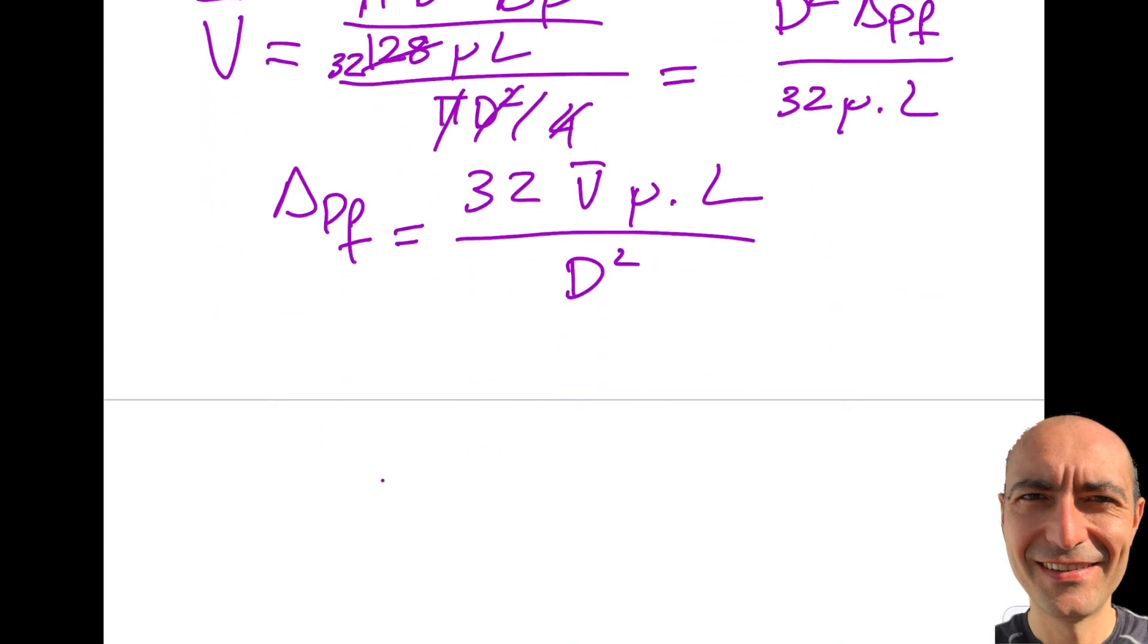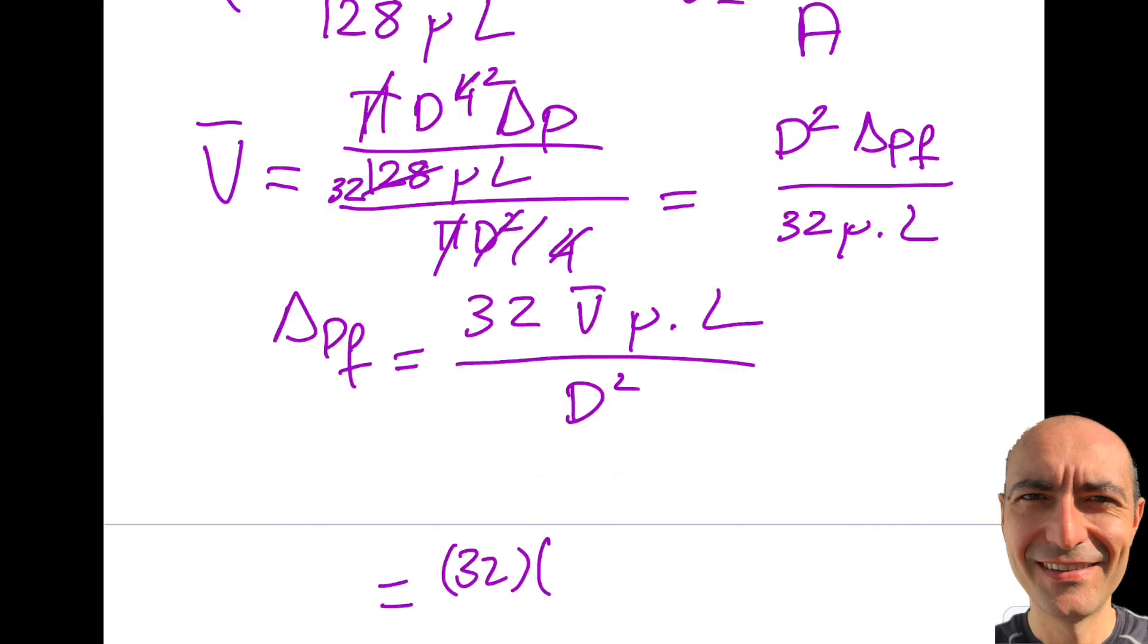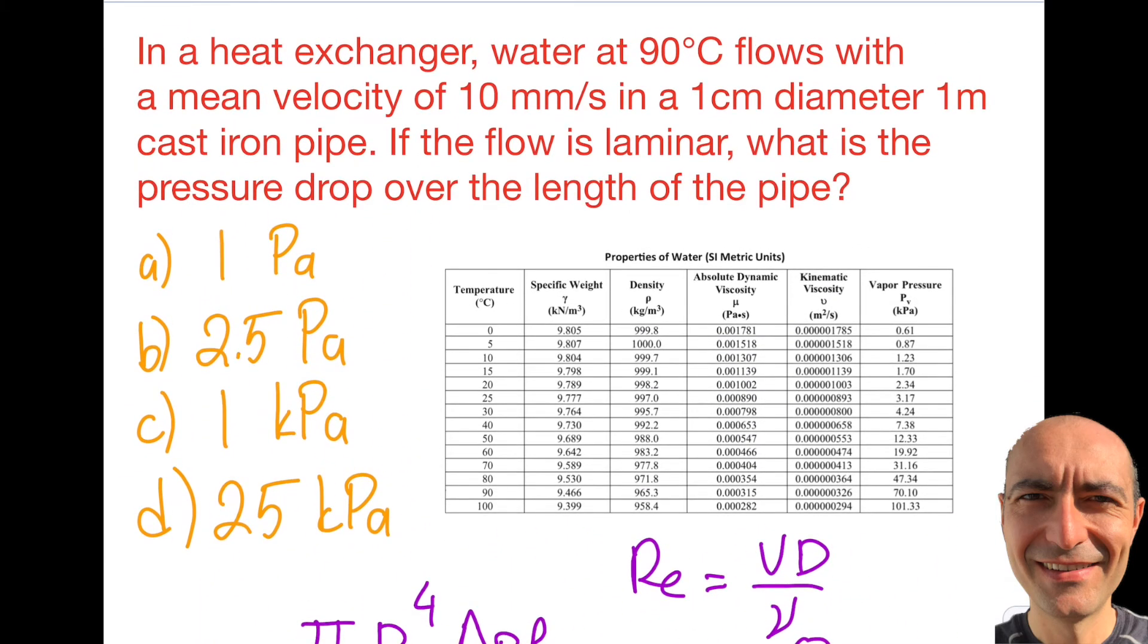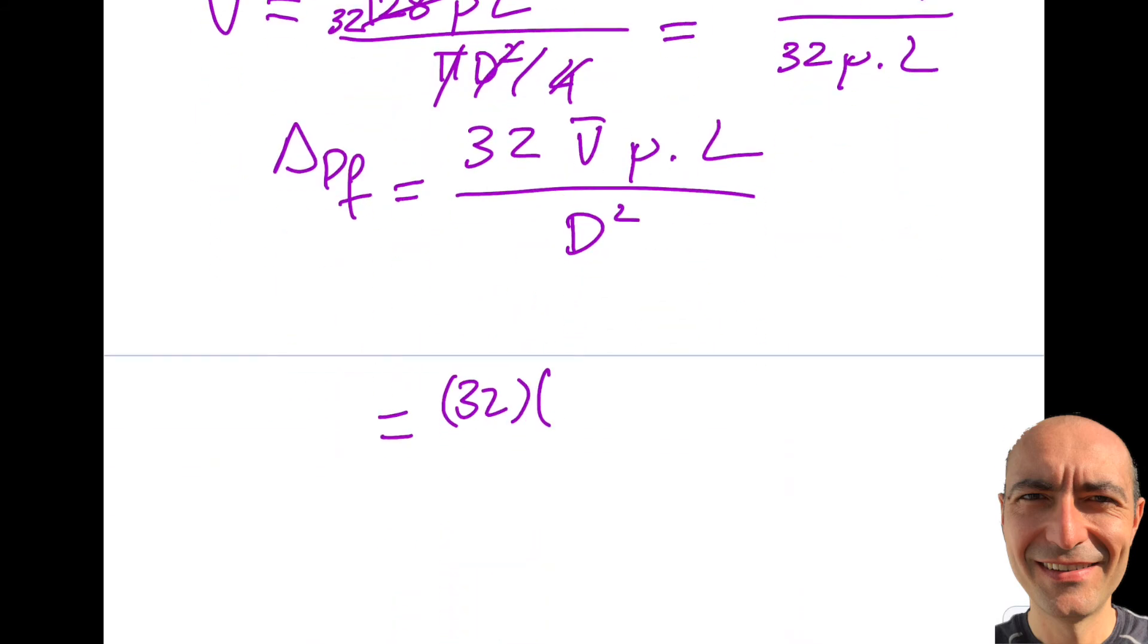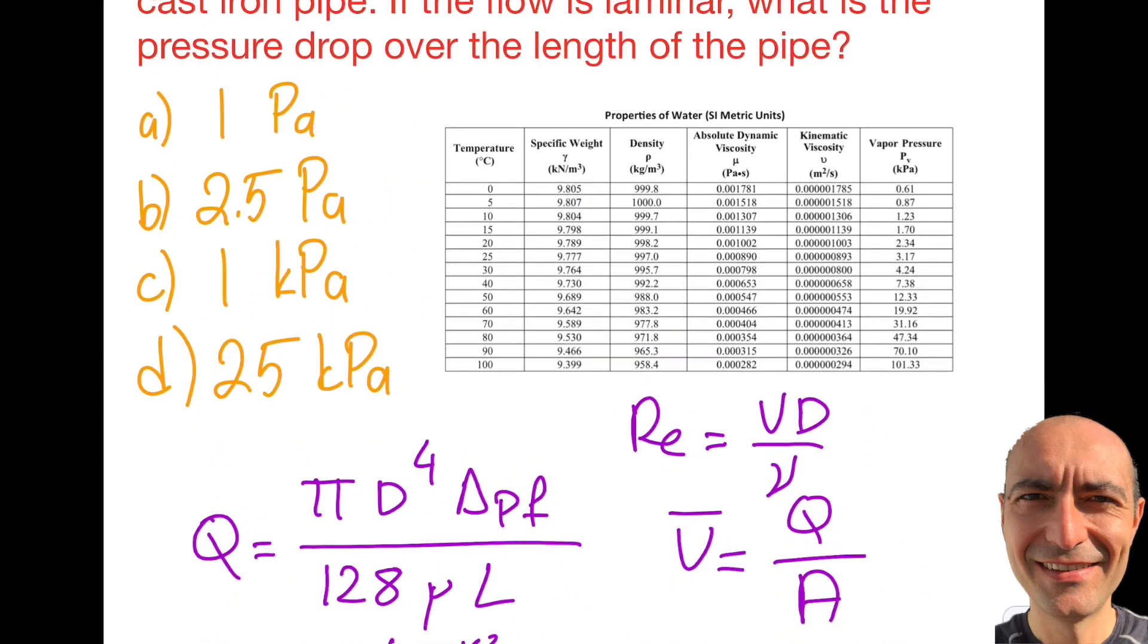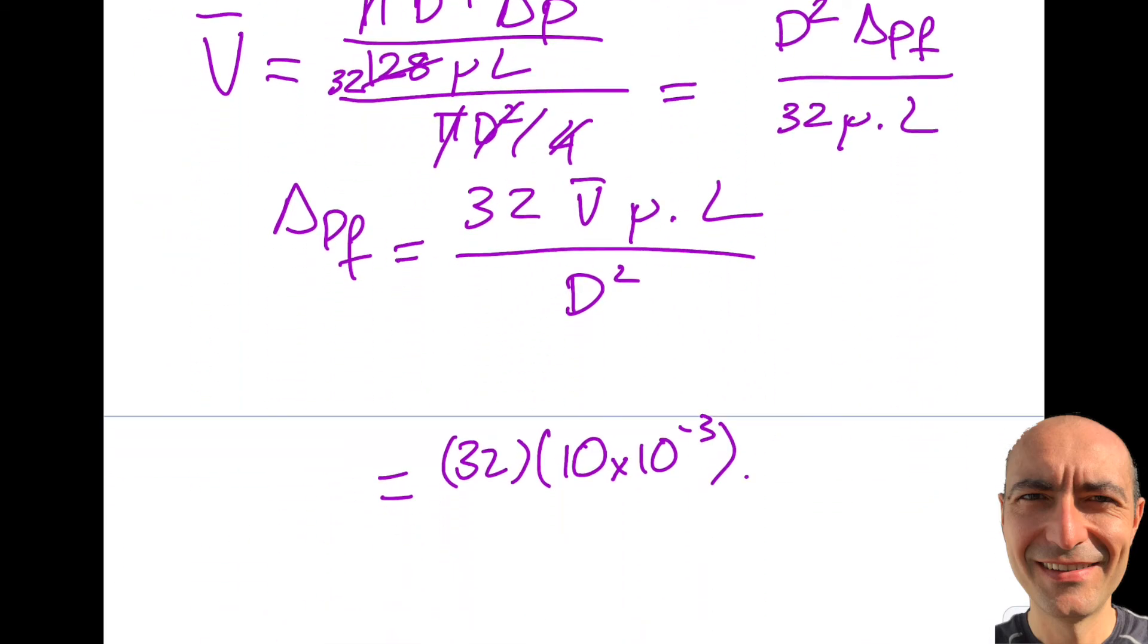The only thing left is to insert these values. 32 times mean velocity was given to me as 10 millimeters per second. So it is 10 times 10 to the minus 3, converting to meters per second. Times the viscosity. The question tells me it's 90 degrees, so what I have to do is follow this particular chart and I find 90 degrees, you see here 0.000315. That is the dynamic viscosity, remember you're not writing kinematic, dynamics here. So it's going to be 3.15 times 10 to the minus 4.